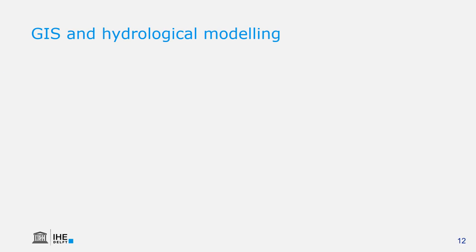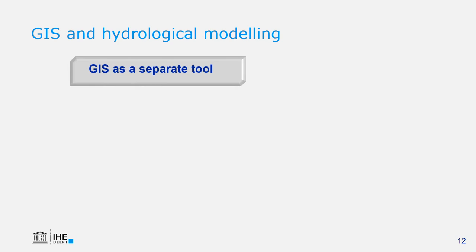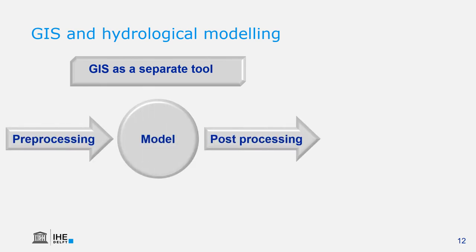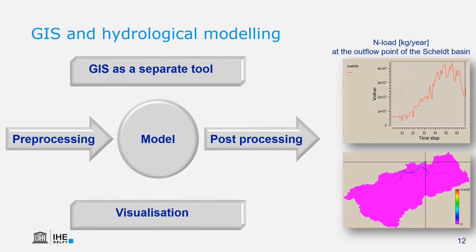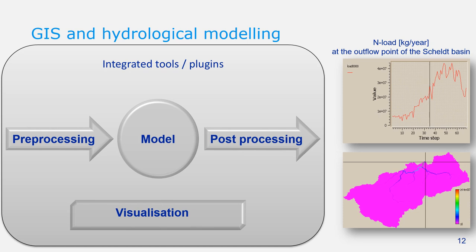We also use GIS in hydrological modeling. GIS can be used as a separate tool to prepare data for the model, and after modeling, post-process the data for visualizations in space and time. Often you also find integrated tools or plugins that handle the whole modeling pre- and post-processing and visualization workflow.